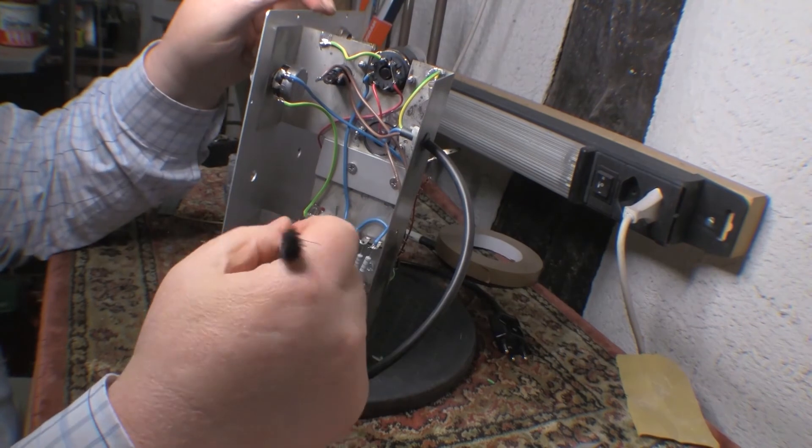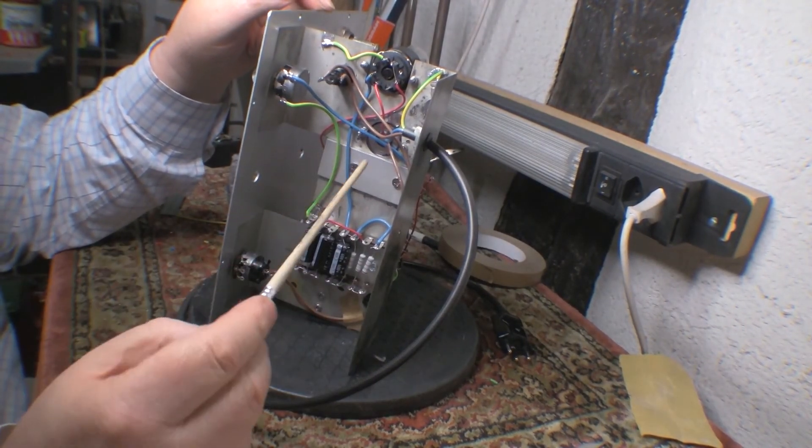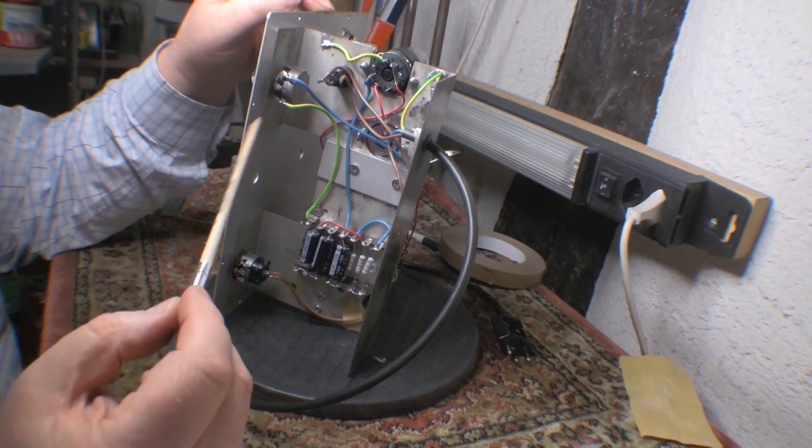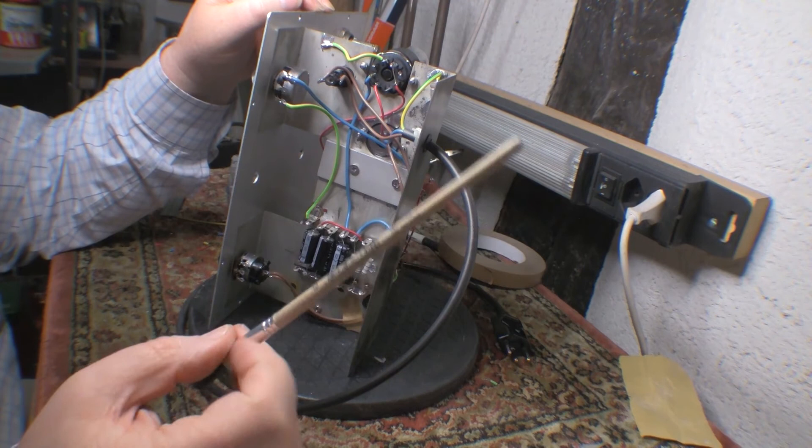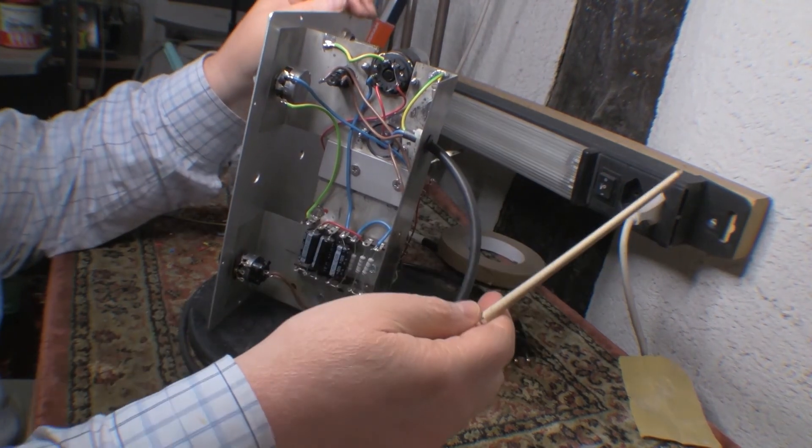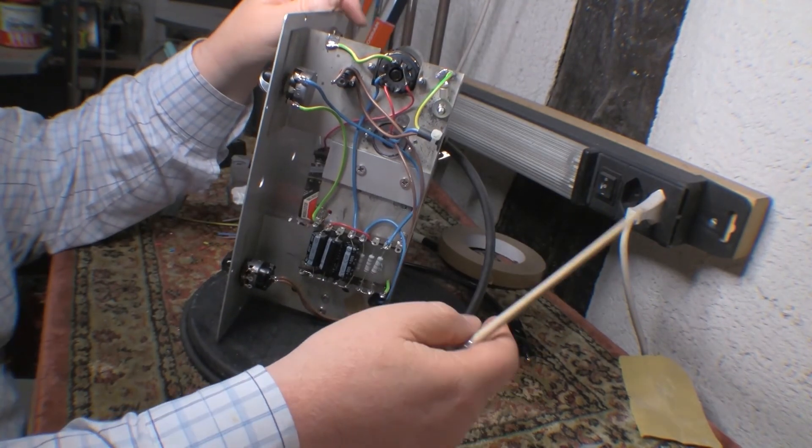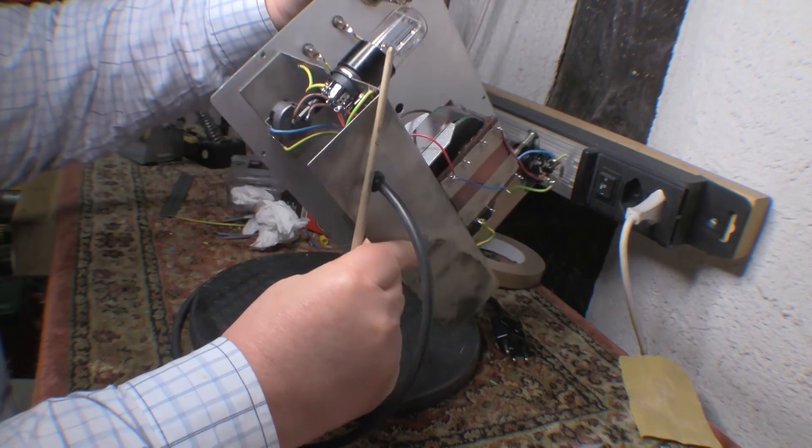I've started wiring up the 500 volt voltage doubler and all that stuff, because I want to test that all that works before I go any further, since that's the main reason I got this thing in the first place. Yeah, looking a bit neater and tidier than the one that came in from eBay.